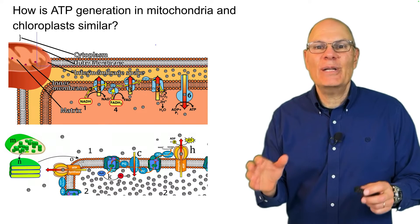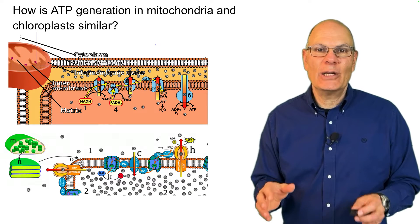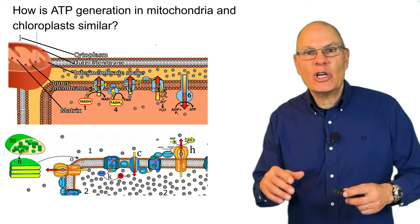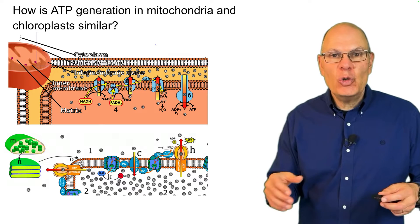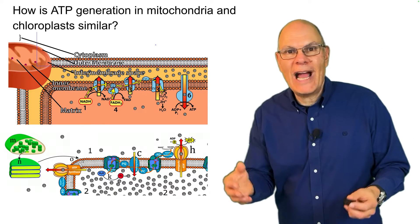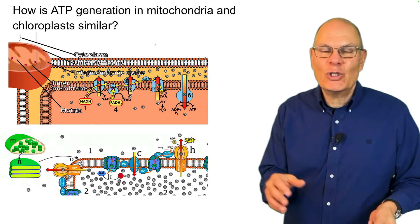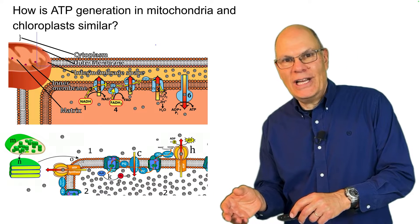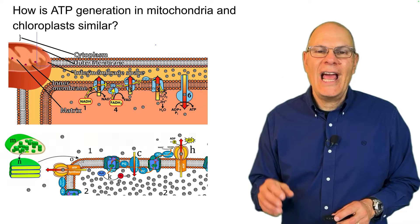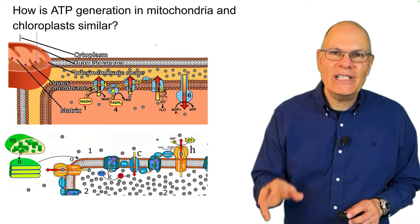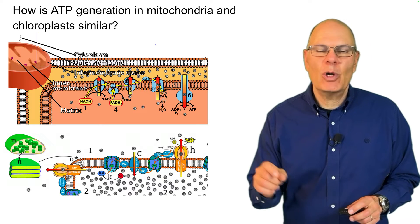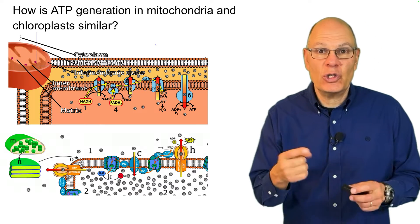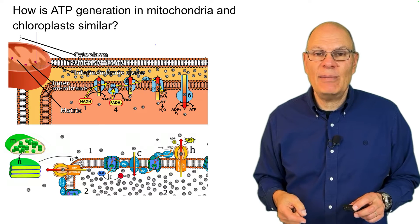How is ATP generation in mitochondria and chloroplasts similar? In unit three, we've talked about these two great metabolic reactions, photosynthesis and the electron transport chain of cellular respiration. There are deep similarities to the way that they work, and this kind of cross-topic thinking is essential to your success on the AP Bio exam.